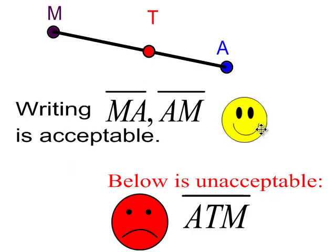I threw a point T in between M and A. So, M, T, and A are collinear. And it's still acceptable to say M, A, or A, M to designate that line segment. But only two letters to define a line segment, not three. So, A, T, M, not acceptable. That T shouldn't be there.